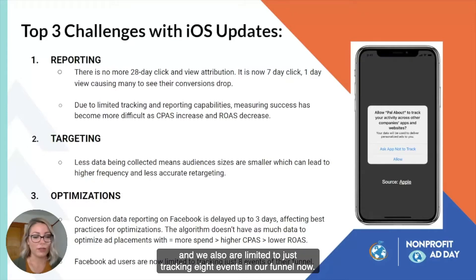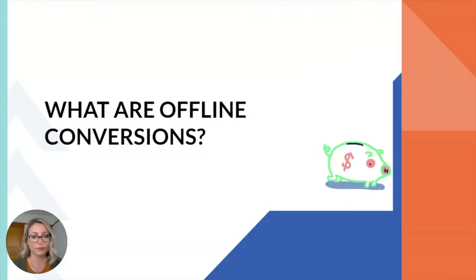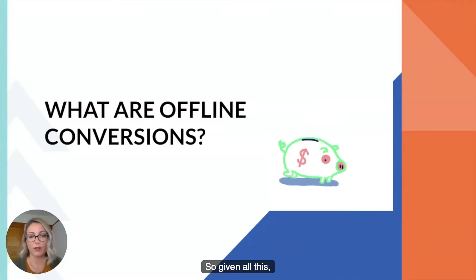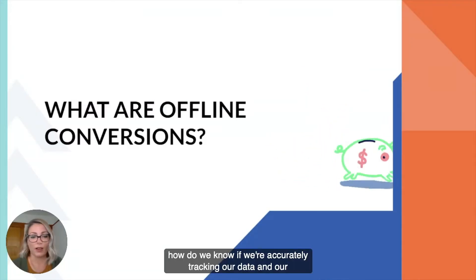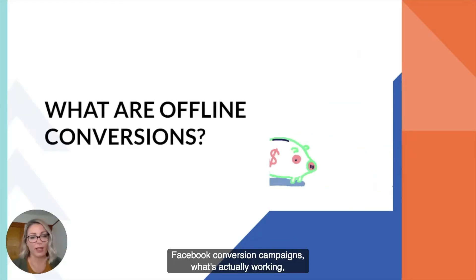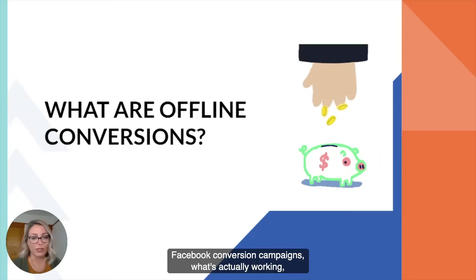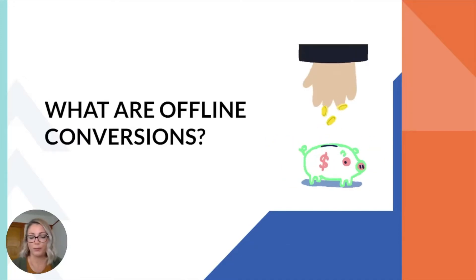We're also limited to tracking just eight events in our funnel now. Given all this, how do we know if we're accurately tracking our data and our Facebook conversion campaigns? What's actually working, what's actually converting? This is where offline conversions come in and can really help.